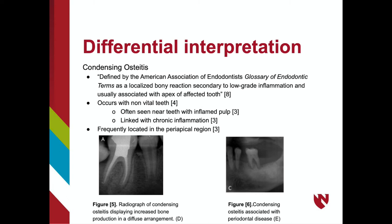Figure 5 is an example of condensing osteitis, displaying increased bone production around endodontically treated, non-vital tooth number 30. Figure 6 displays condensing osteitis associated with periodontal disease on a molar in the left lower quadrant.